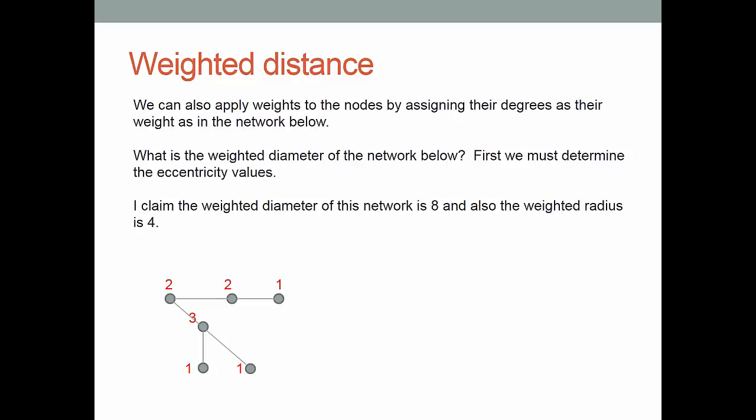I claim that as you check all of these that eight will be the maximum value for the eccentricity values. Also if you look at the node weighted two that's also adjacent to the node weighted three, that one has minimum eccentricity value because its eccentricity value is four.